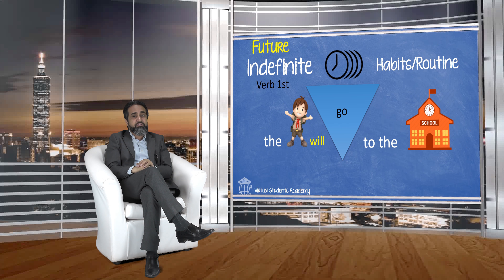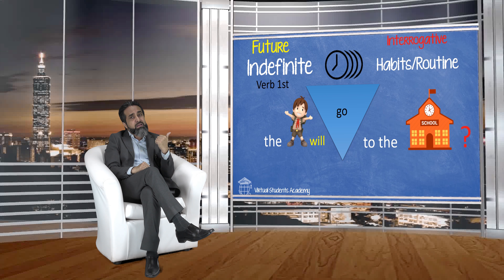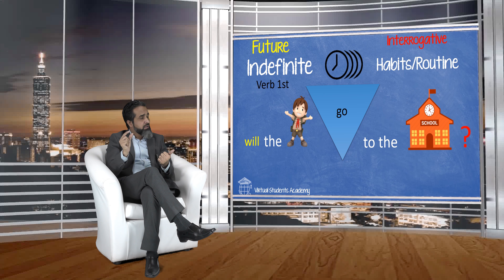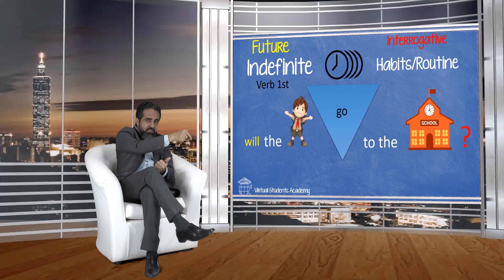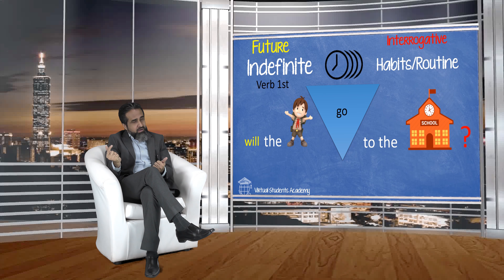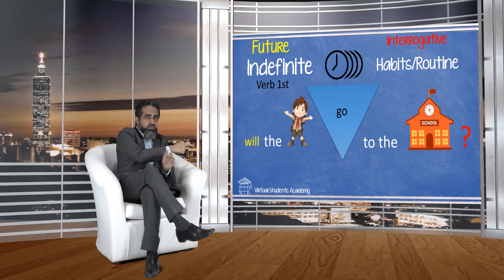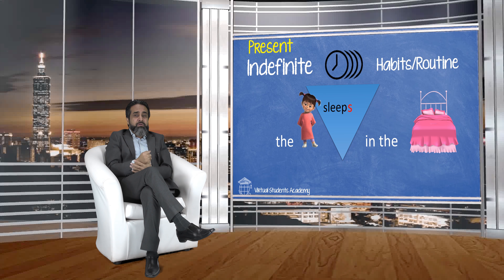Now move to future indefinite. The sentence is: 'The boy will go to the school.' This is quite easy comparatively, because 'will' is already a helping verb. We simply bring 'will' to the front to make it interrogative: 'Will the boy go to the school?'